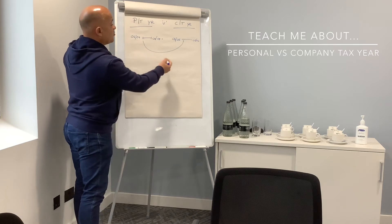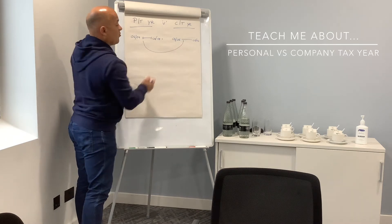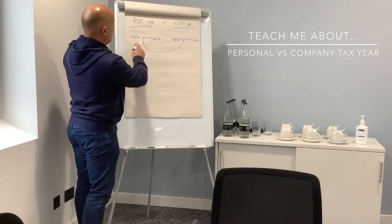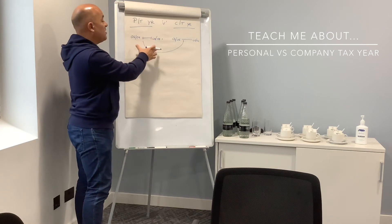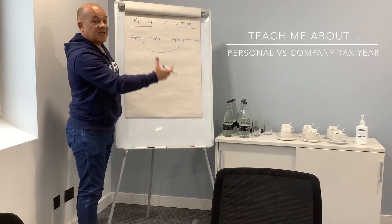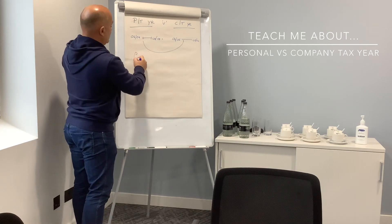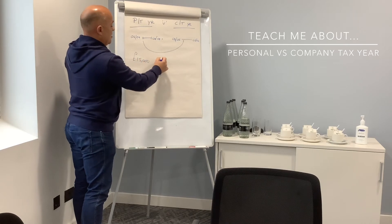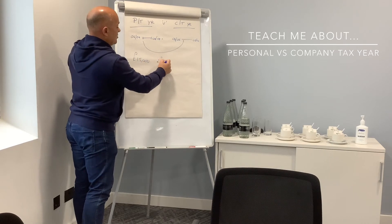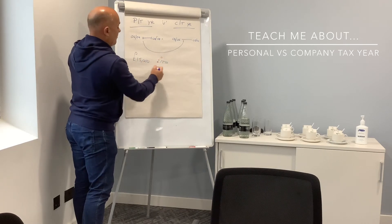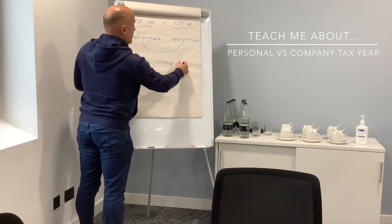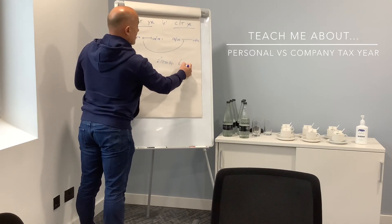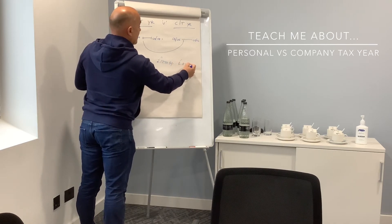Salary itself - so when you're drawing salary from your company, your salary will fit within the tax year date. So let's assume you drew a £15,000 salary which is £1,250 gross per month. You're probably at around about £1,150 net.